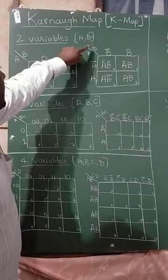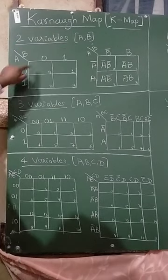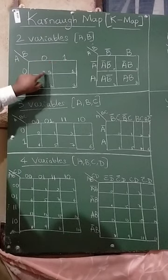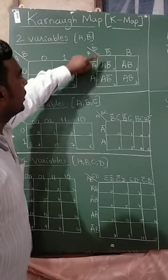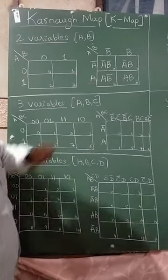In 2 variables, it is A, B. I have written here 0, 1, 0, 1. In the cells: 0, 1, 2, 3. Here, I have written A bar A, B bar B. You need to multiply these two to get this.